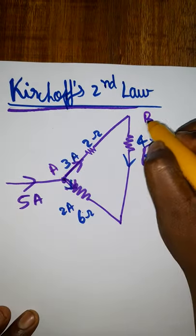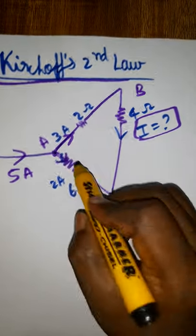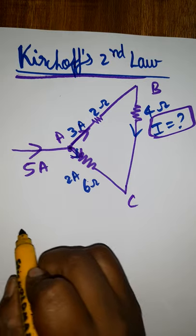Now I am going to apply the second law ABC. This is a loop I am going to take it. For AB, so algebraic sum of all the voltage is going to be 0.